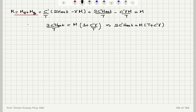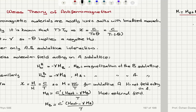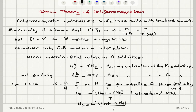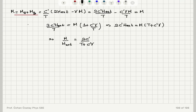Therefore, M divided by H_external — which is the susceptibility — is 2C' divided by T plus C'gamma. This is different from the net field H acting on sub-lattice A; here H is the external field. This is in the form C over T plus theta, where C equals 2C'. The constant we measure is twice the constant for each individual sub-lattice.